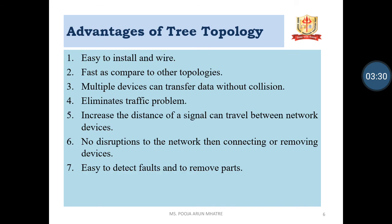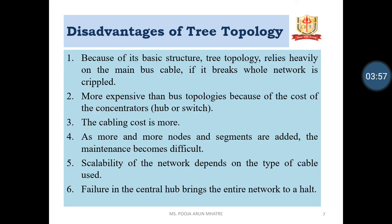The merits and demerits of tree topology are almost similar to those of star topology. Advantages of tree topology: easy to install and wire; fast compared to other topologies; multiple devices can transfer data without collision; eliminates traffic problems; increases the distance signals can travel between network devices; no disruption of network when connecting and removing devices; easy to detect faults and remove parts. Disadvantages: because of its basic structure, tree topology relies heavily on the main bus cable. If it breaks, the whole network gets crippled and the network goes down.